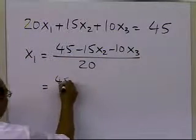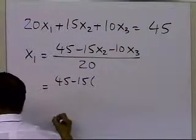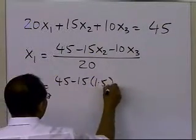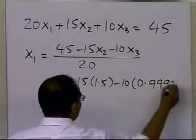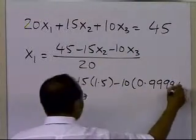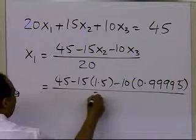So minus 15, what is x2? x2 I just obtained is 1.5, and x3 is 0.99995, and I divide it by 20.